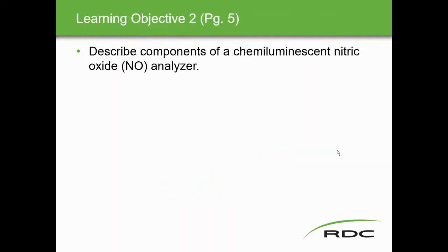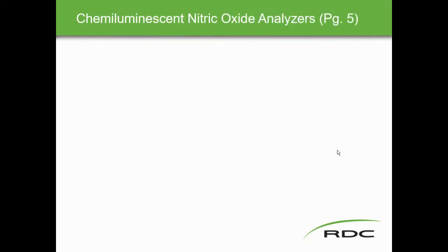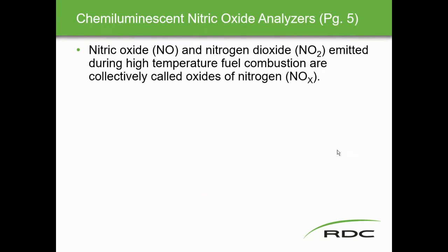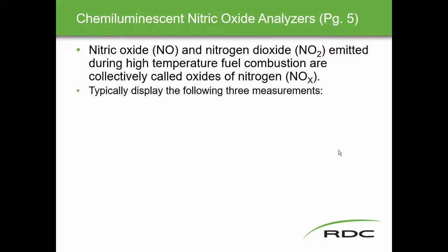Learning objective two: describe components of the chemiluminescent nitric oxide analyzer. Nitric oxide and nitrogen dioxide are emitted during high-temperature fuel combustion — that's what comes out of your plant stacks. Collectively called NOx, these oxides of nitrogen are the combination of NO and NO2. The analyzer typically displays three measurements: NO, NO2, and NOx.